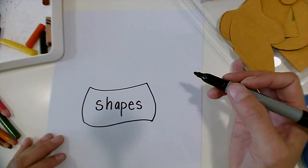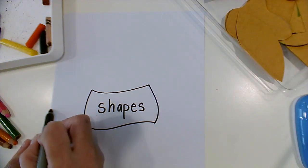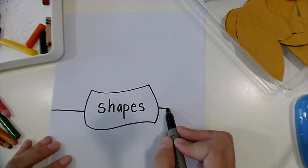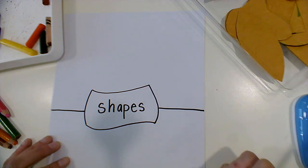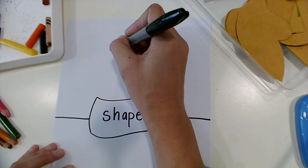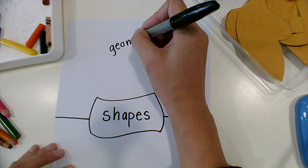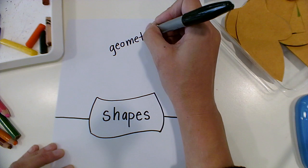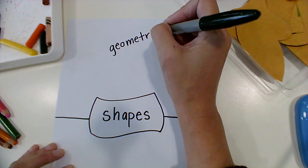Then we're going to talk about the two kinds of shapes. I like to separate my page into two parts, the top and the bottom. On the top I'm going to write the word 'geometric' because that's one of the kinds of shapes that we have.